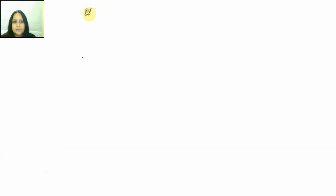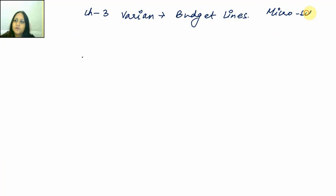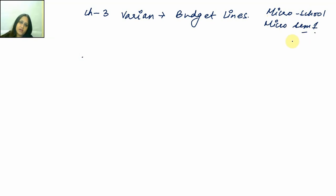Welcome to Kochi. Let us start with Chapter 3 of Varian, which is called budget lines. Now I know budget lines aapne bohat pari pada hai — pehli aapne micro mein pada school ke andar, fir aapne pada micro sem1 ke andar. So there is nothing you may feel which is going to be new and challenging. Well, let us see. Chapter 3 Varian budget lines is what we are doing.